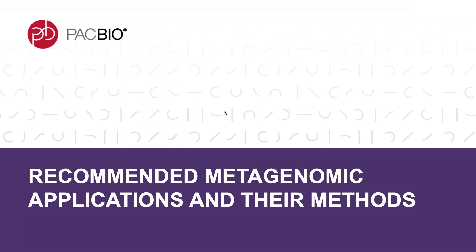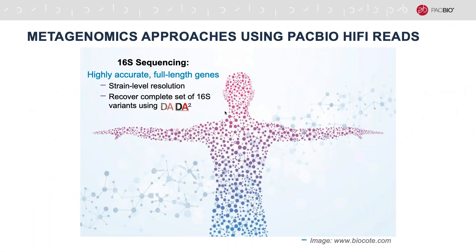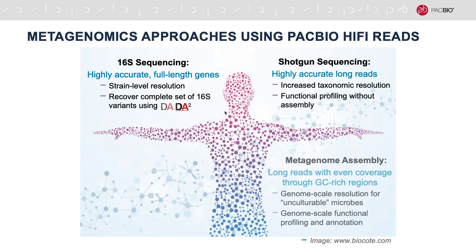For metagenomics, there are three approaches we recommend. First is 16S sequencing — because read lengths are so long, you can sequence through the full 16S region, or even 16S plus ITS regions, allowing taxonomic identification down to the strain level. We recommend a set of tools called Dada2. The second approach is shotgun sequencing, which provides a deeper look into not just the identities but the functions of the community. We recommend sequencing 10 KB fragments and generating high accuracy HiFi reads for metagenome assembly as well as taxonomic and functional profiling. Our examples will focus on this shotgun approach.